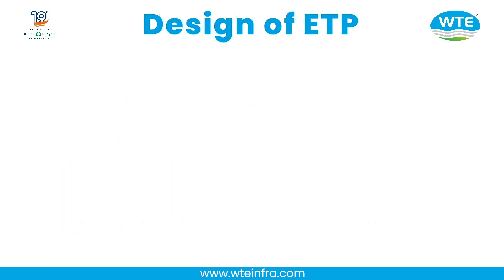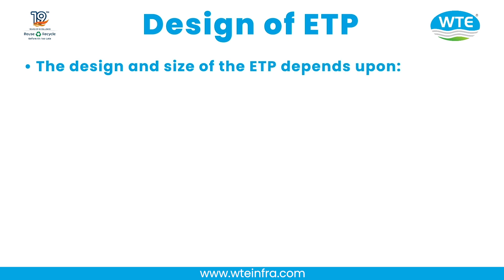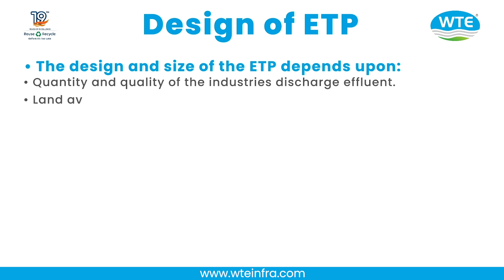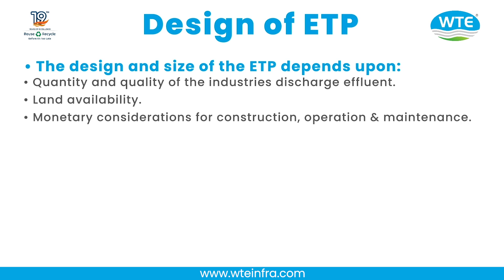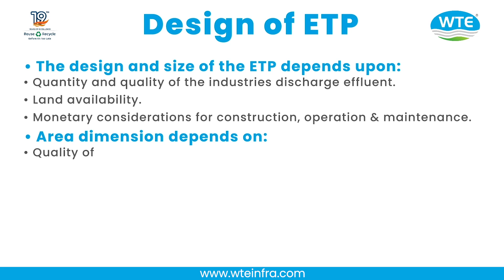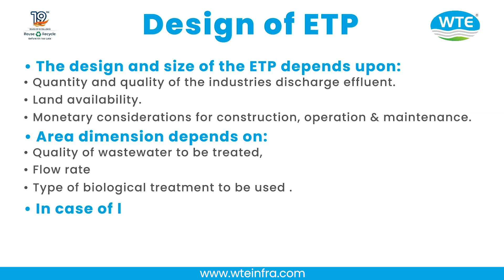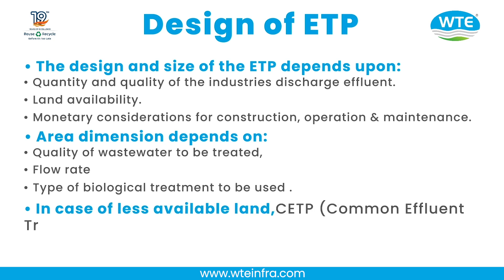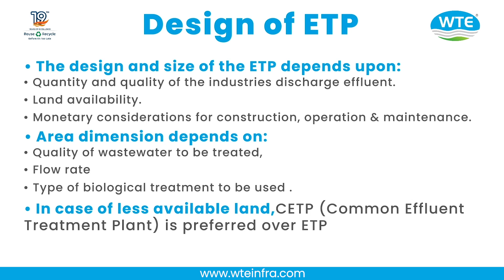Design of ETP: The design and size of the ETP depends upon the quantity and quality of the industry's discharge effluent, land availability, and monetary considerations for construction, operation and maintenance. Area dimensions depend on quality of wastewater to be treated, flow rate, and type of biological treatment to be used. In cases of less available land, a Common Effluent Treatment Plant (CETP) is preferred over an individual ETP.